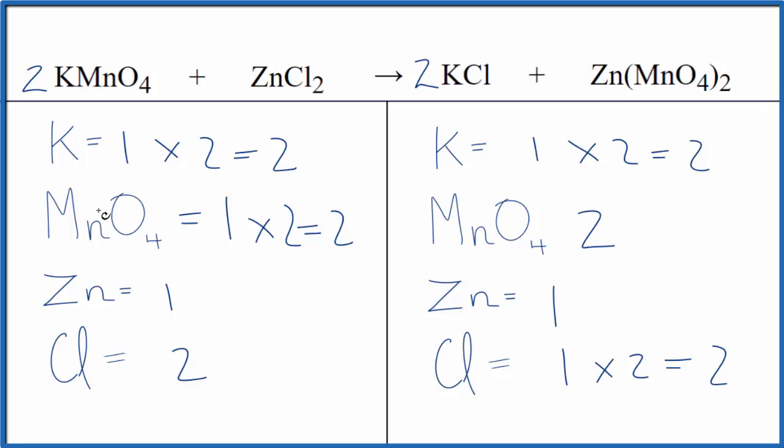So this is a really useful technique. Saves you a lot of time on exams and homework. You could have counted these separately and you would get the same coefficients. This is Dr. B with the balanced equation for KMnO4 plus ZnCl2. Thanks for watching.